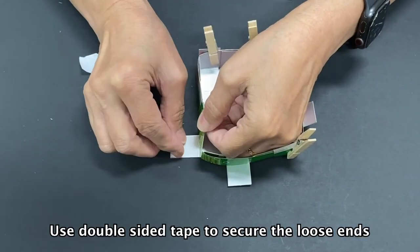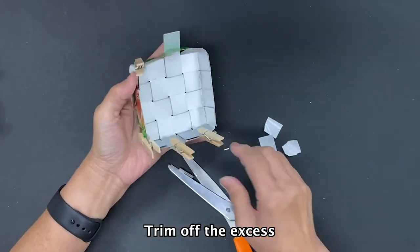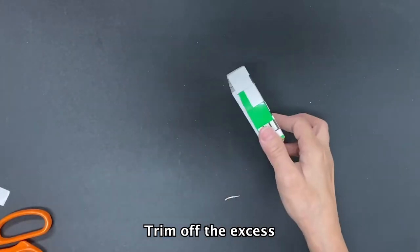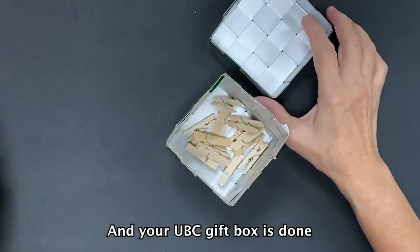Use double sided tape to secure the loose ends. Trim off the excess. And your UBC gift box is done!